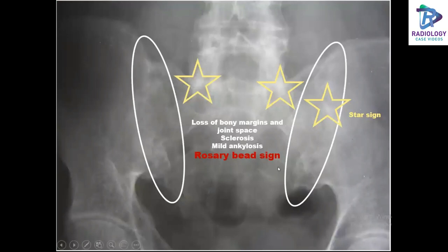This radiograph projects the sacroiliac joints and shows two signs seen in the SI joints in AS: the rosary bead sign and the star sign. The star sign is a triangular opacity depicting sacroiliac joint ligamentous ossification. The rosary bead sign shows loss of bony margins, loss of joint space, sclerosis, and mild ankylosis with fuzzy margins in the SI joints.